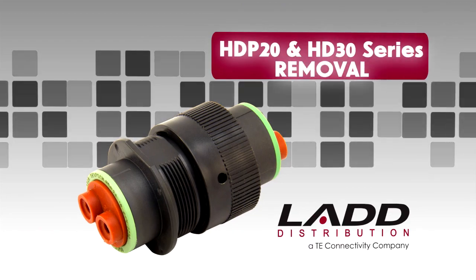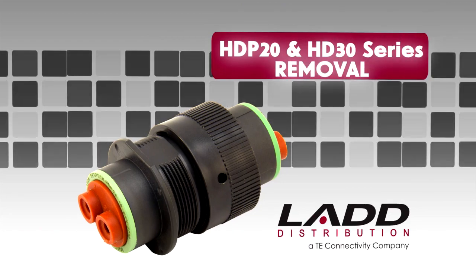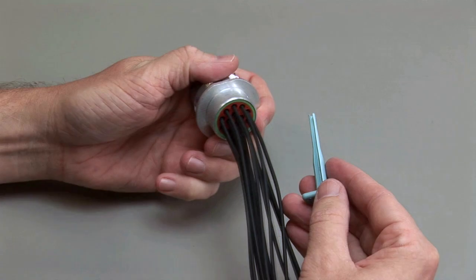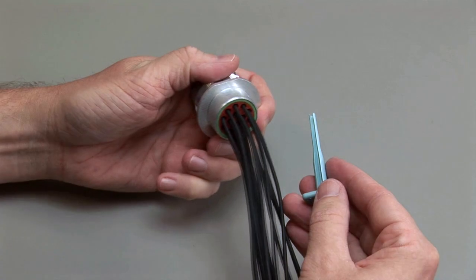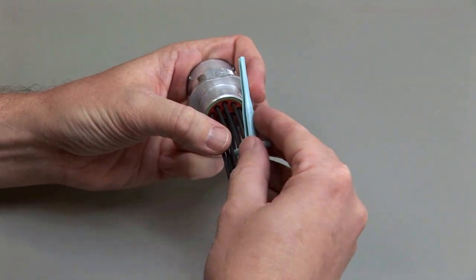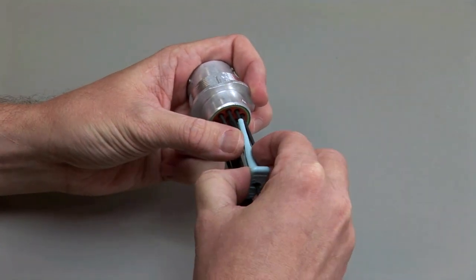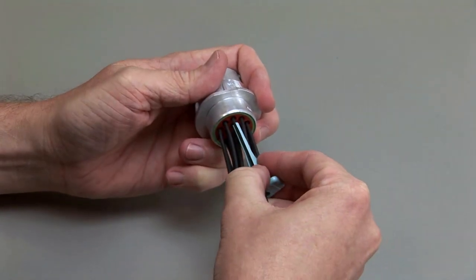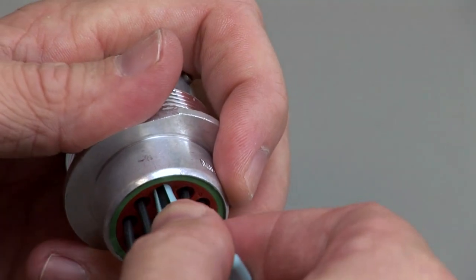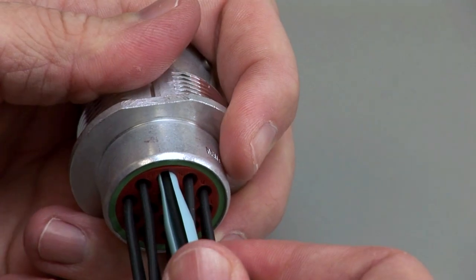HDP20 and HD30 contact removal. Hold the connector so the rear grommet is facing you. Using the correct size plastic removal tool, snap the tool over the wire so it will slide down the wire. Slide the tool along the wire into the cavity until it engages the contact and resistance is felt.